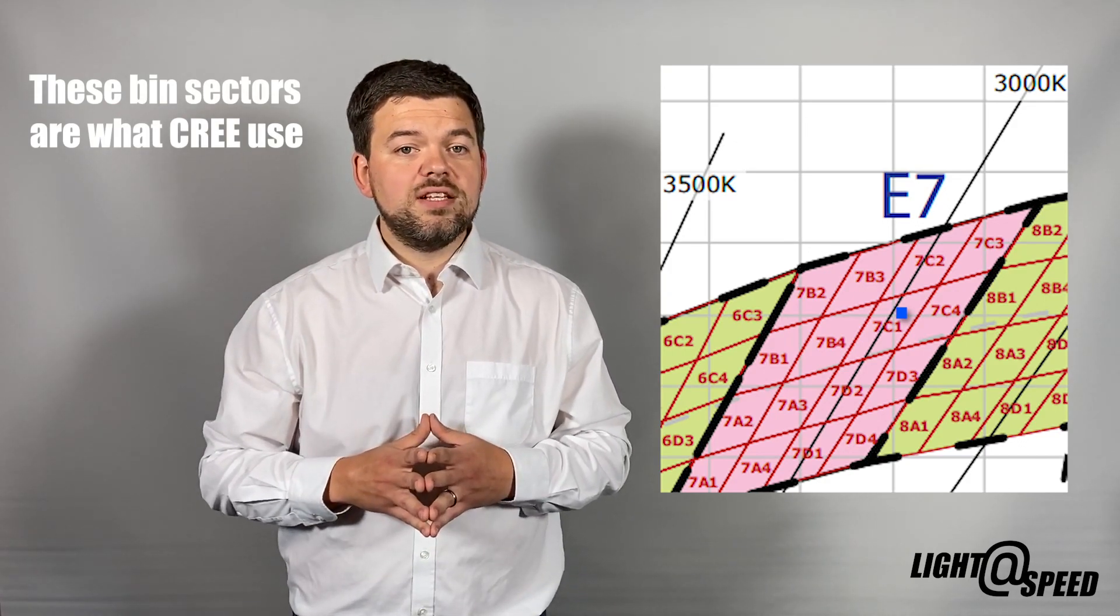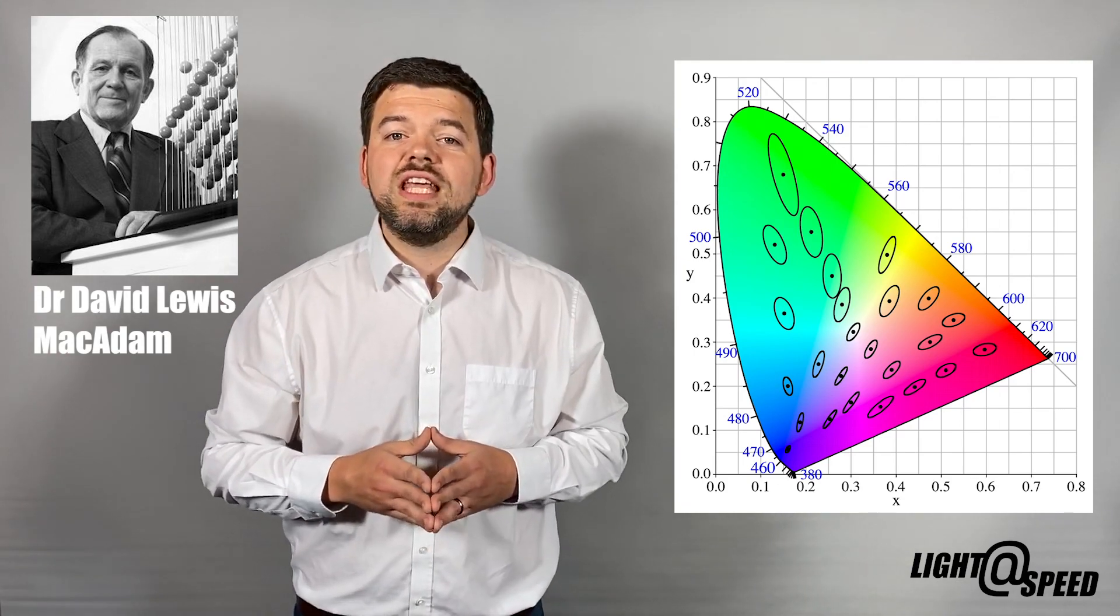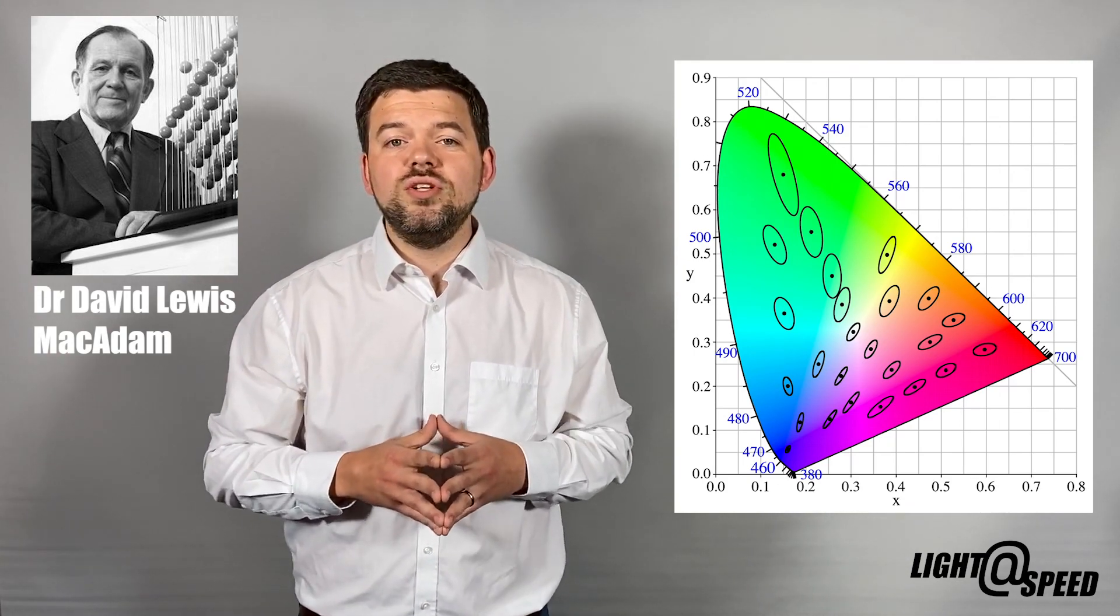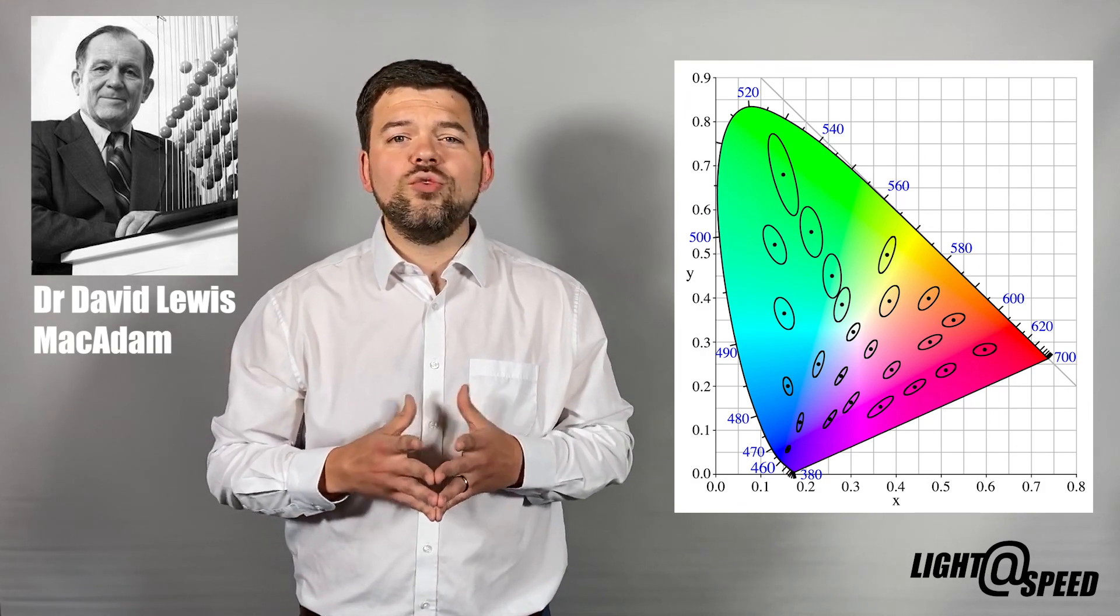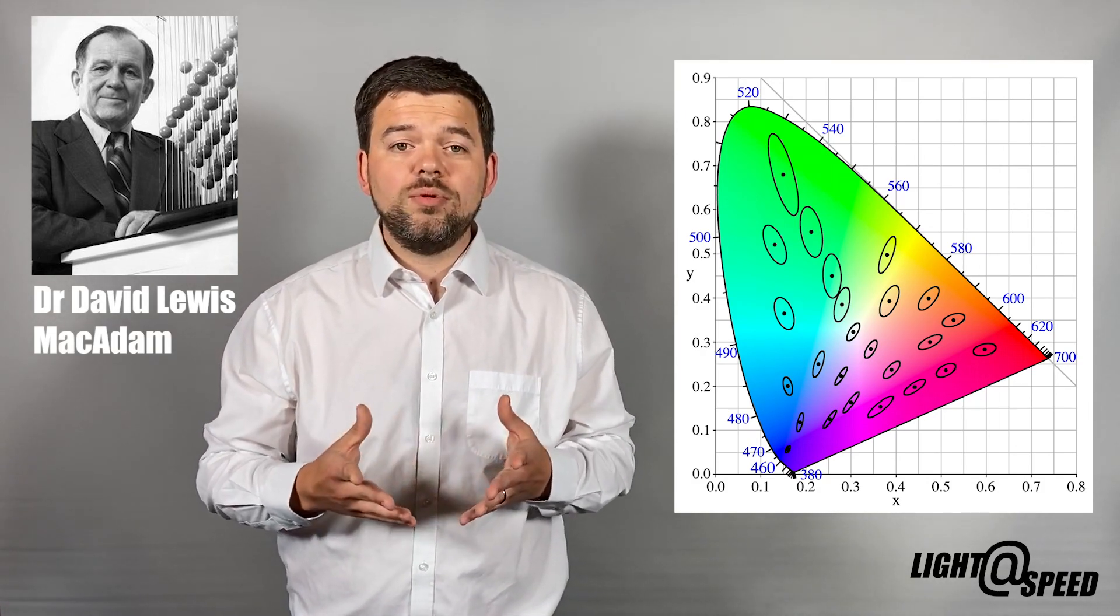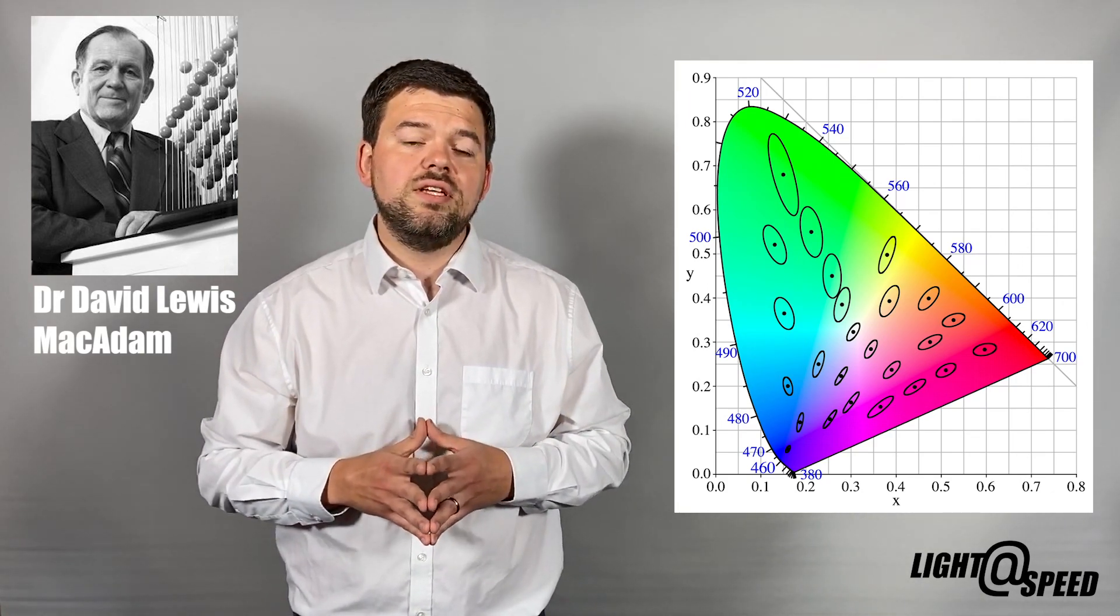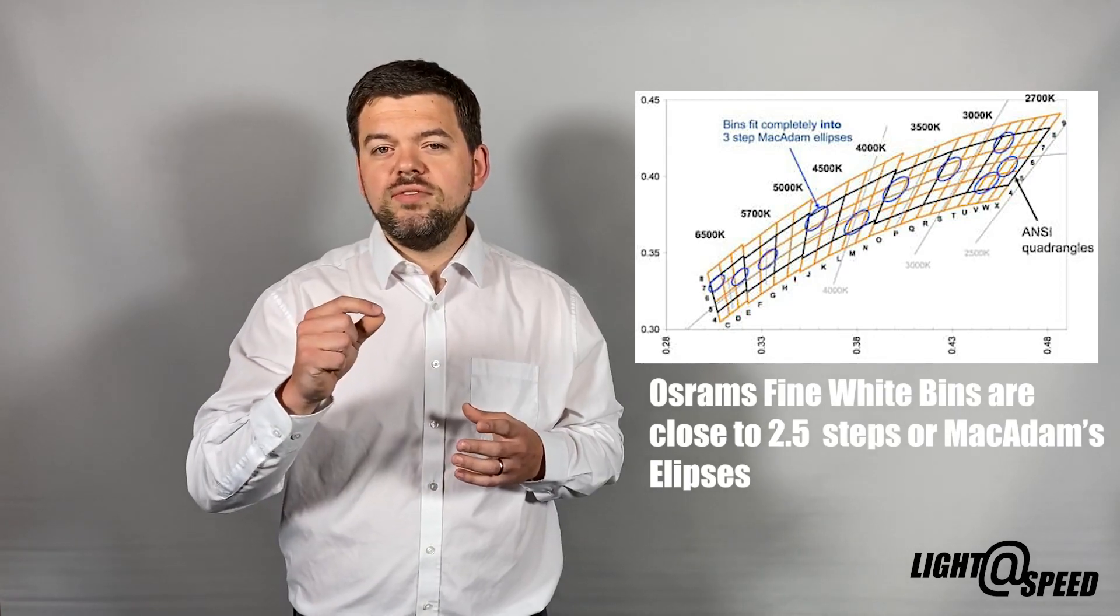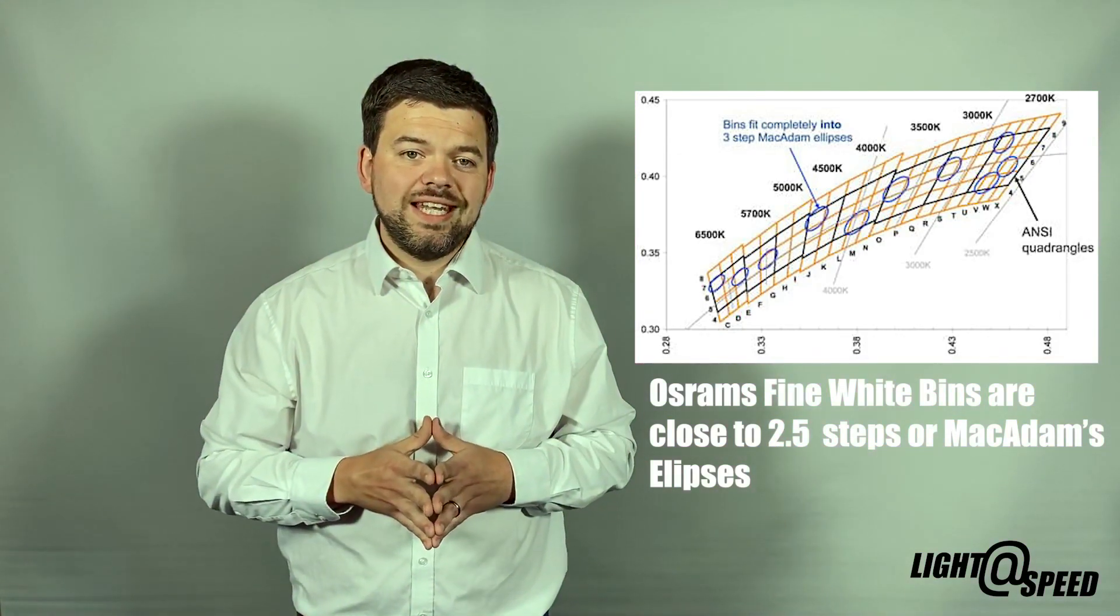The shape and size of the bins closely match a Macadam's ellipse. The Macadam's ellipse was developed by Dr David Macadam in 1942 and is a drawn ellipse shaped area on the chromaticity diagram, and it's where the great majority of the population wouldn't be able to determine the difference between two light sources within the same ellipse. The shape tells us that the human eye finds it more difficult to detect a change in colour temperature than a change in red or green tint.